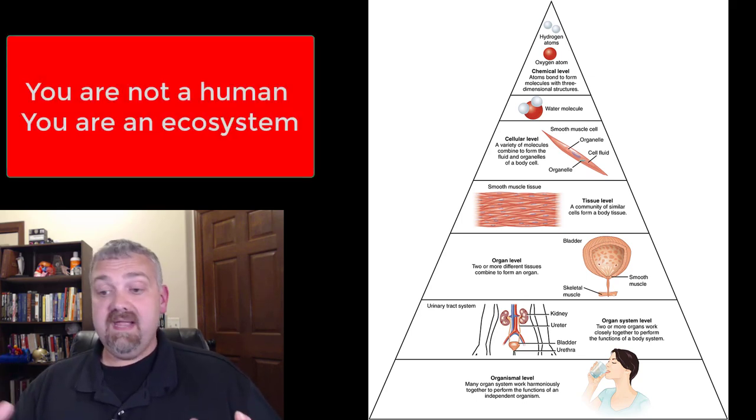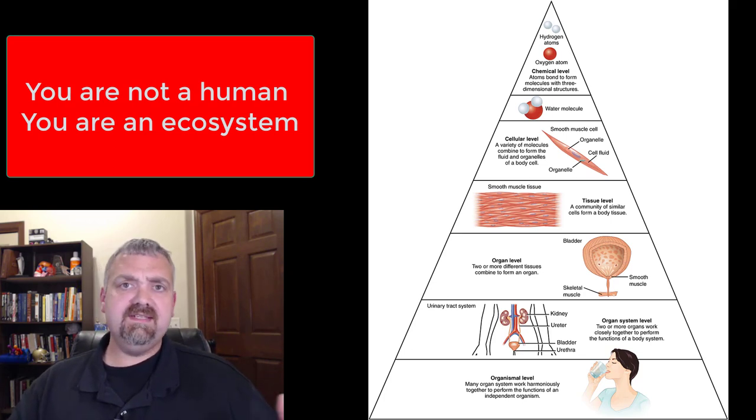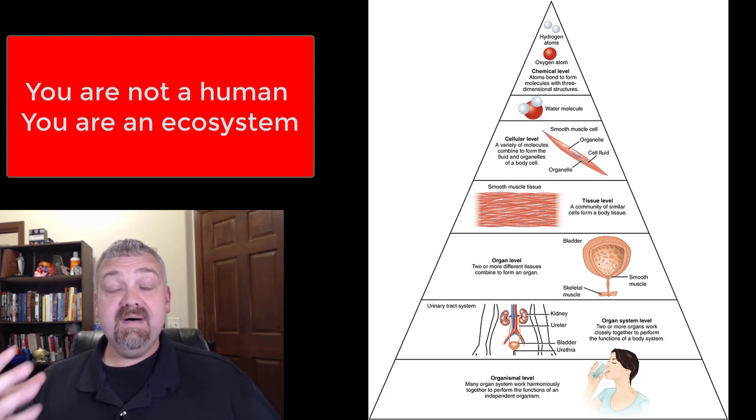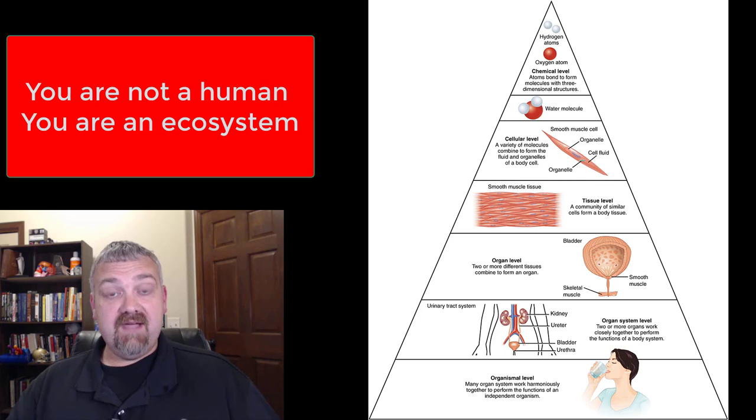We are not a human. We're made of somewhere in the neighborhood of 32 to 37 trillion cells, 80 to 85% of them are red blood cells. I find that so fascinating. But we also have 40 trillion microbes that live in and on us. So we are not a human. We are an ecosystem.